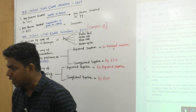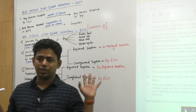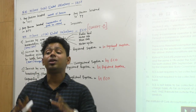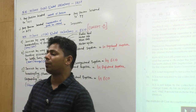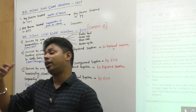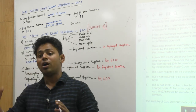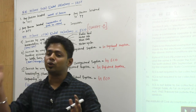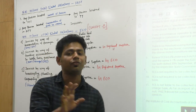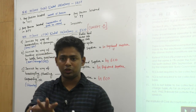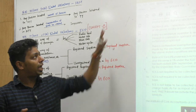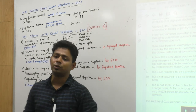Section 9(3) talks about reverse charge mechanism - we are finished with reverse charge mechanism. Those 14 points you have to remember. Section 9(4) talks about unregistered to registered - unregistered to registered but only for specified goods and services to specified registered persons. This is the latest amendment. Now we have reached Section 9(5).